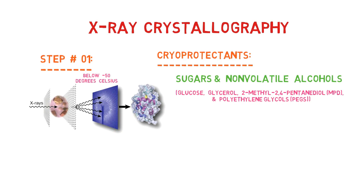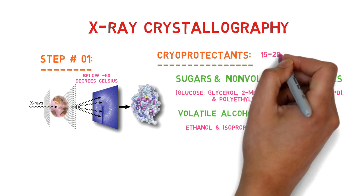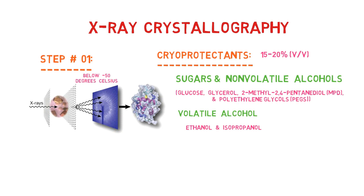In addition, volatile alcohols, such as ethanol and isopropanol, have been useful in RNA crystal cryostabilization. Typically, the cryoprotectant should constitute at least 15-20% of the soaking solution for the crystals.